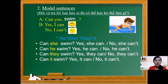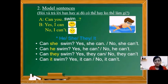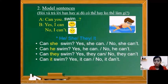If you want to ask about he, she, they, or it, you can ask: Can she swim? Yes, she can. No, she can't. Can he swim? Yes, he can. No, he can't. Can they swim? Yes, they can. No, they can't. Can it swim? Yes, it can. No, it can't.